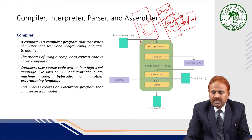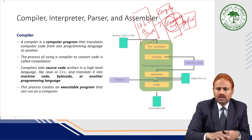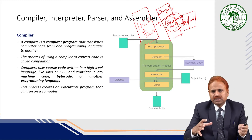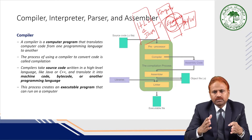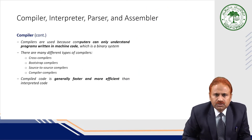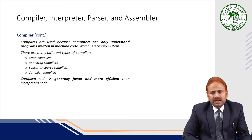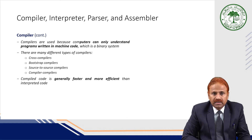These executable codes are directly run by the hardware. In short, a compiler is a computer program that translates the high-level language program into an executable file. Compilers are used because computers can only understand programs written in machine code, which is a binary system. There are many different types of compiler: cross-compiler, bootstrap compiler, source-to-source compiler, and compiler-compiler.